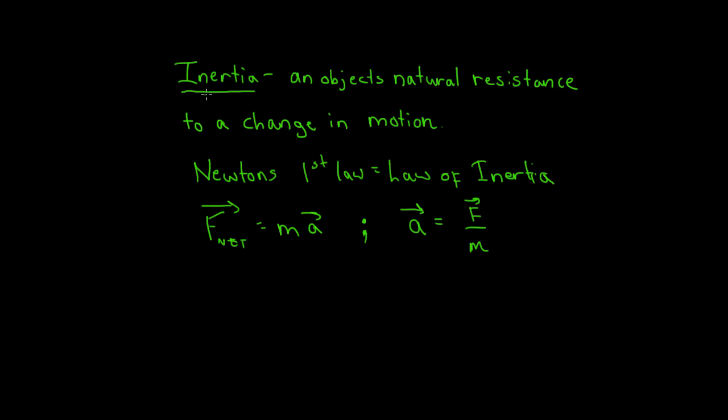So inertia is an object's natural resistance to a change in motion. Acceleration describes that change in motion. So let's think about the idea of inertia. Let's say we have a given force, one Newton. We're going to compare here. We have a given force, one Newton for one mass, and a given force, one Newton for a second mass.